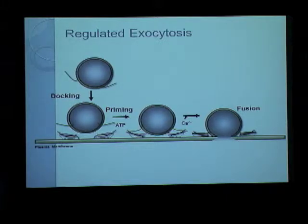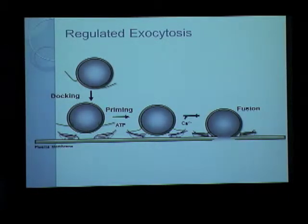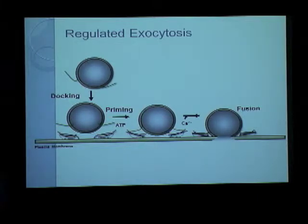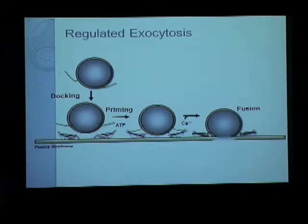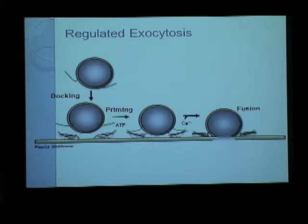Regulated Exocytosis has three steps. The first is called docking, whereby a vesicle is brought close to the plasma membrane. The second is called priming, which makes a docked vesicle ready for release. This involves tethering the vesicle to the plasma membrane by formation of complexes between vesicular SNARE proteins and the target membrane SNARE proteins. Following a rise in intracellular calcium concentration, the membranes merge and lead to release of the vesicle contents. The third step is termed fusion.